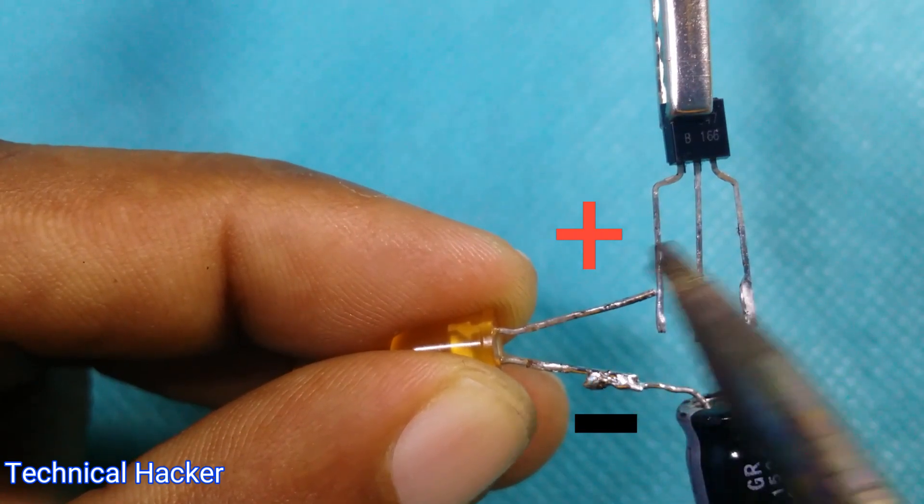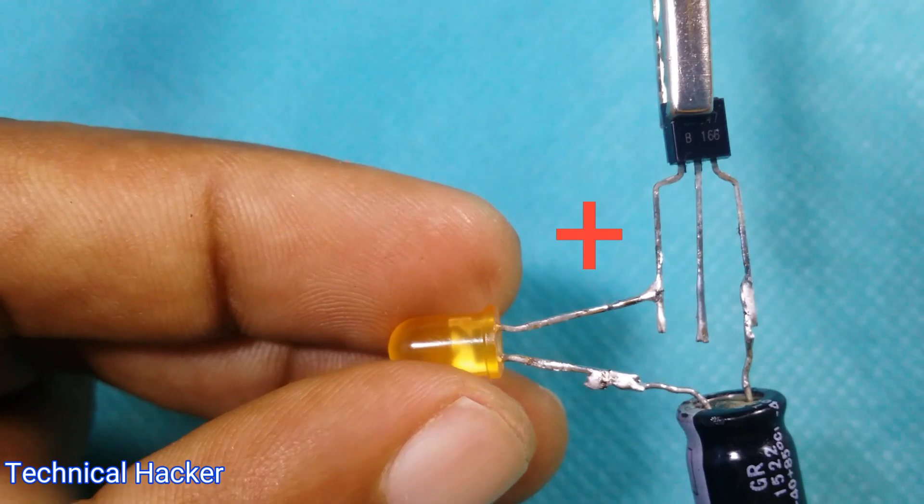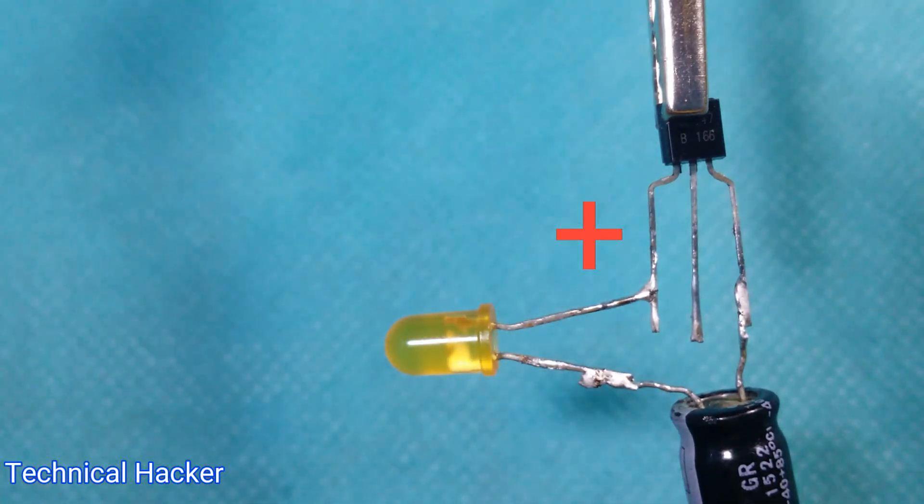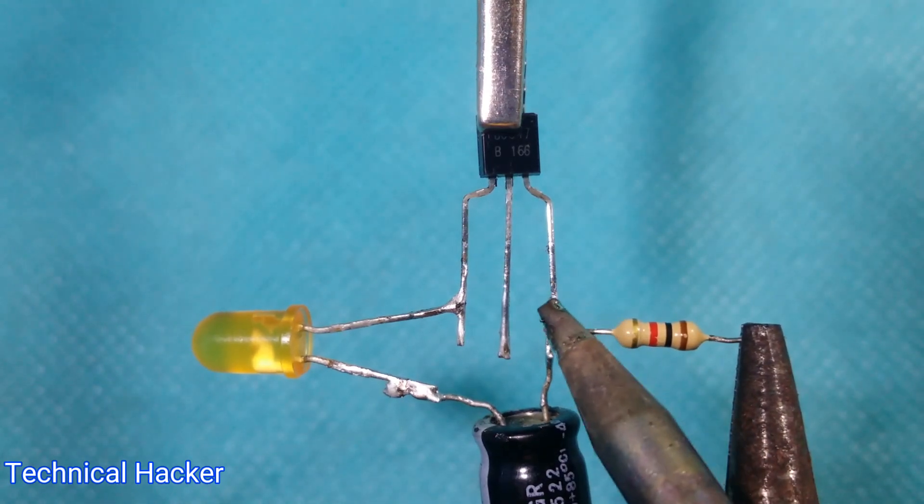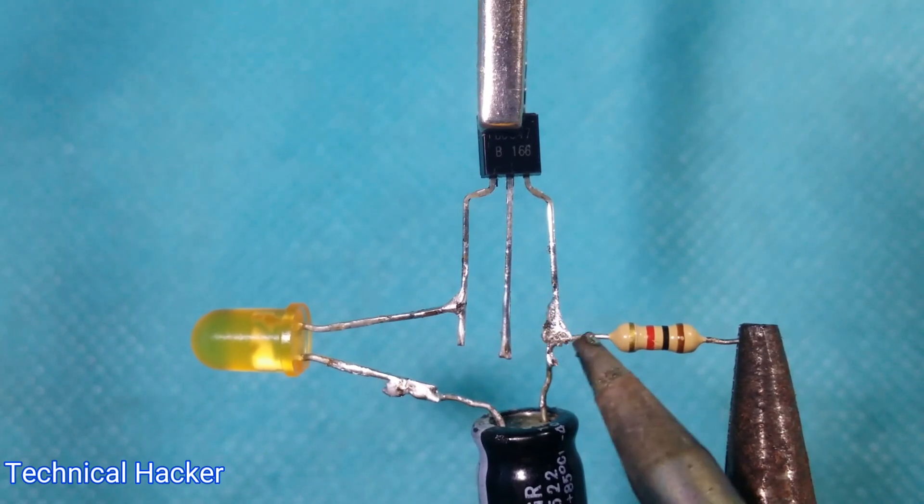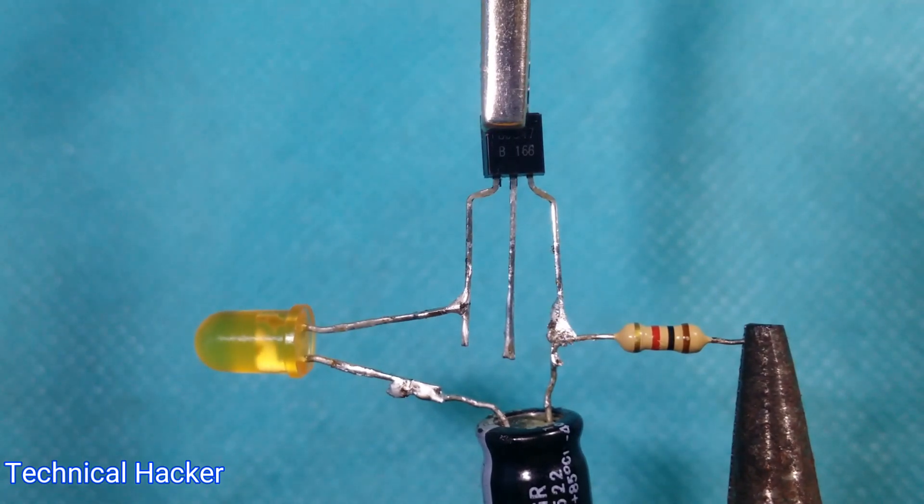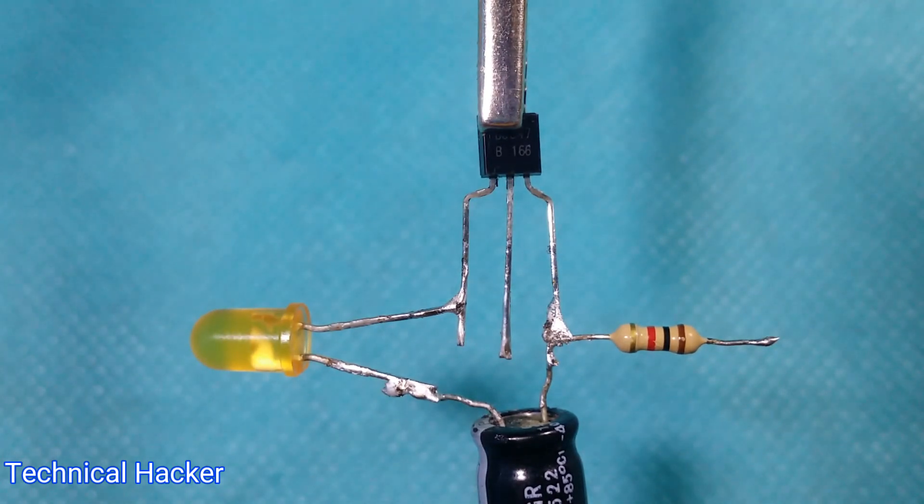Then soldering LED positive side and transistor collector pin. Soldering 1 kilo ohm resistor, capacitor positive side, and transistor emitter pin. Friends, you can see this circuit is complete.